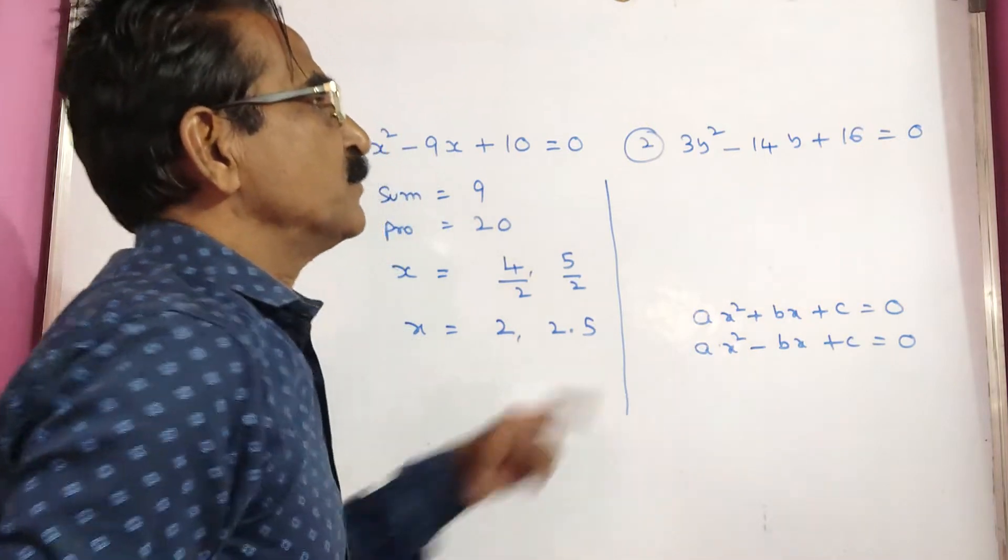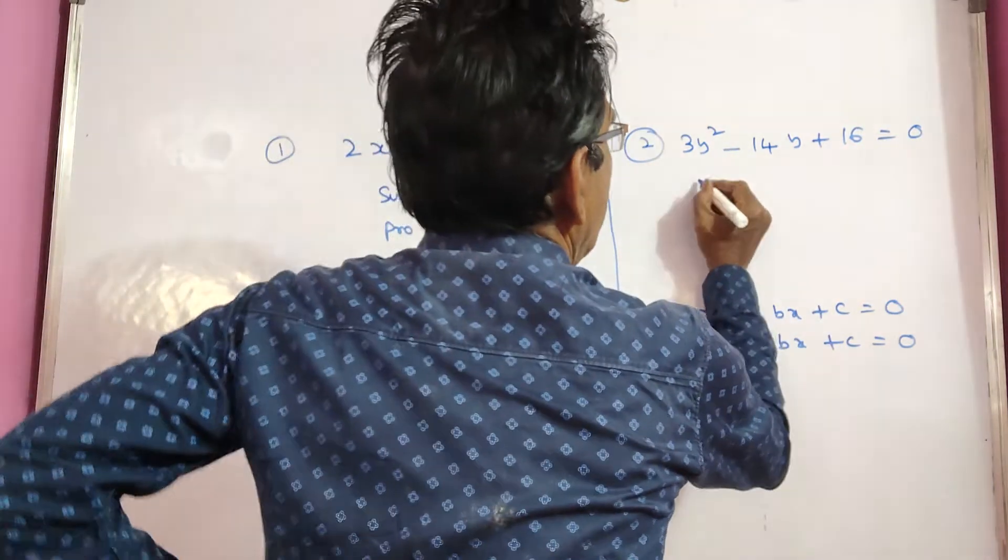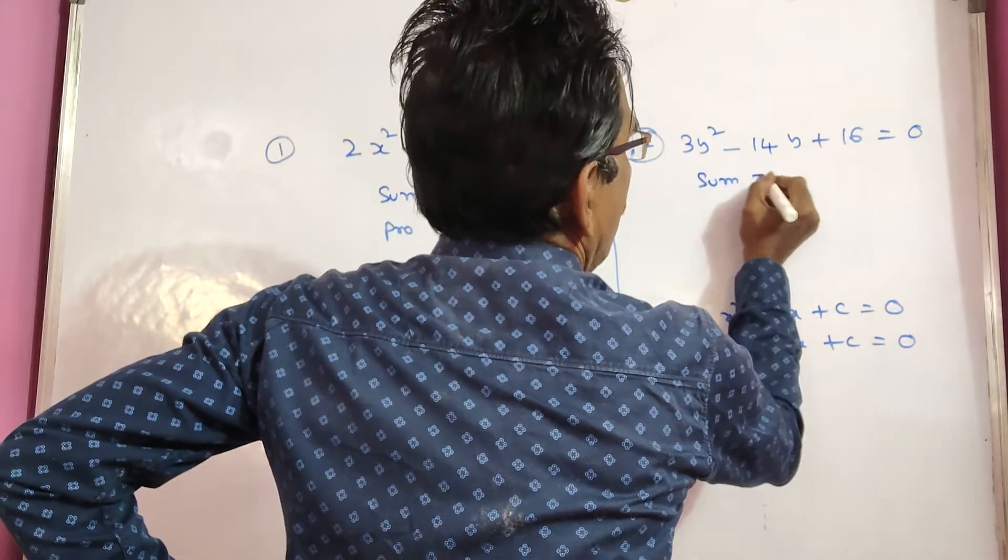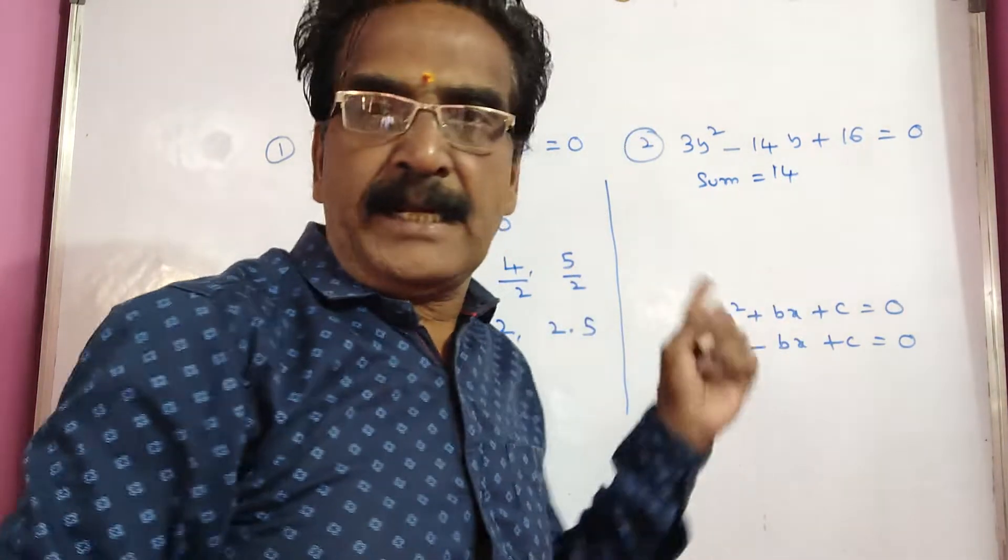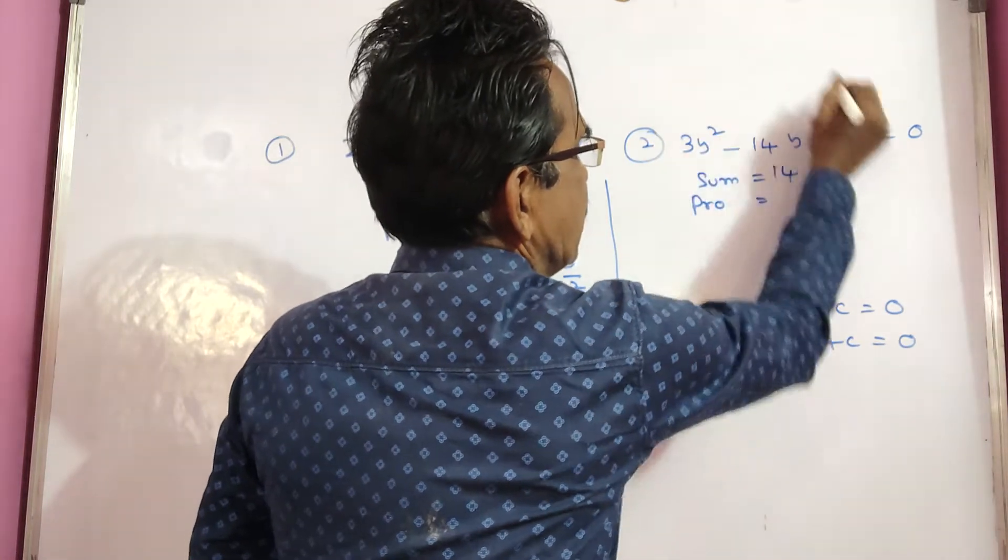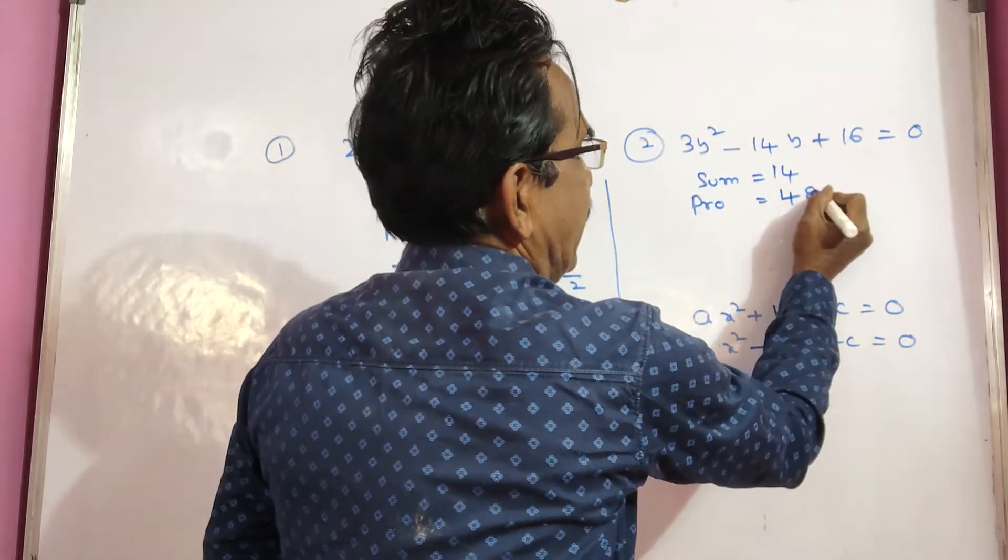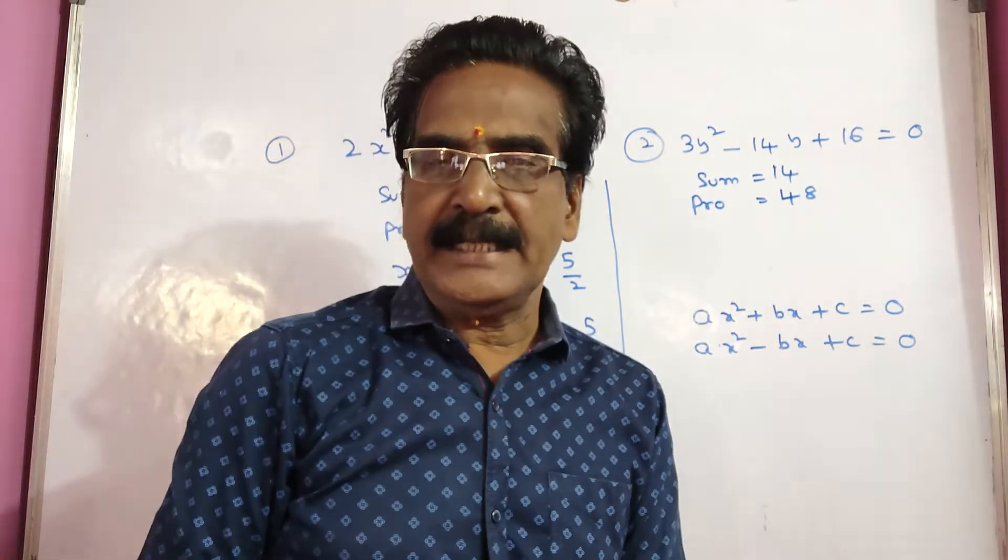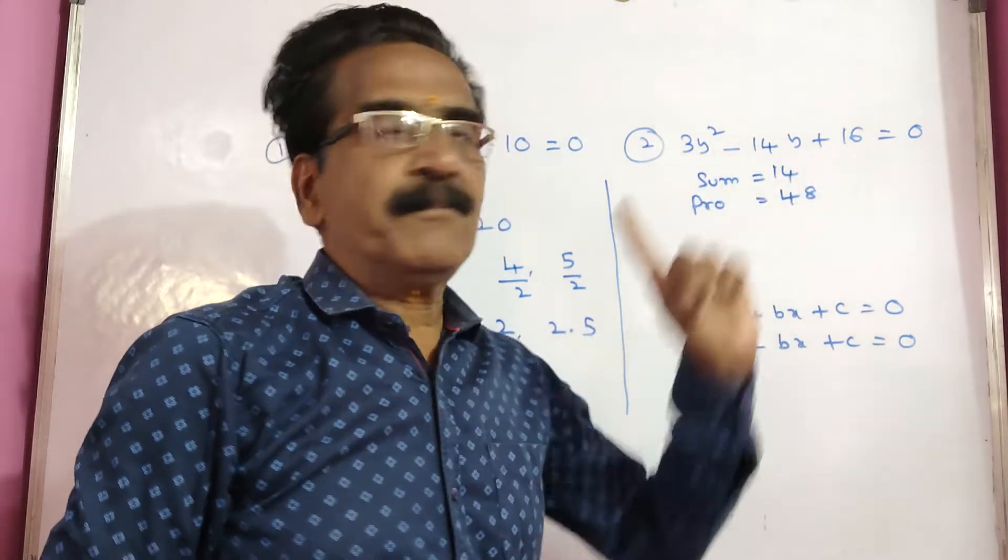Then let us see y values. Here sum is 14 and product of the roots 3 sixteenths, 48. So product 48, sum 14.